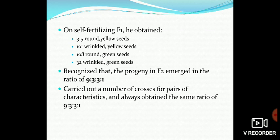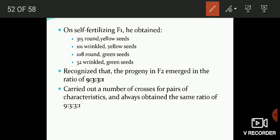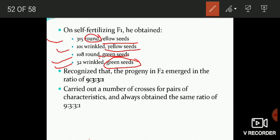On selfing the F1 plants, he obtained the F2 generation. In F2, he observed 315 plants with round seeds and yellow color, 101 plants with wrinkled seeds and yellow color, 108 plants with round seeds and green color, and 32 plants with wrinkled seeds and green color. On critically analyzing these numbers, he recognized that the F2 progeny was emerging in a ratio of 9:3:3:1 — nine with round seeds and yellow cotyledon color, three with round seeds and green, three with wrinkled seeds and yellow.